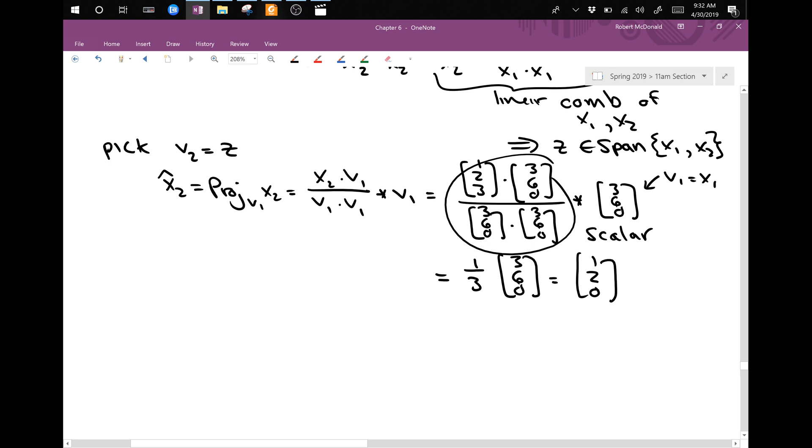And so z will be equal to x2 minus x2 hat. x2 is [1, 2, 2] minus [1, 2, 0], and that's equal to [0, 0, 2].